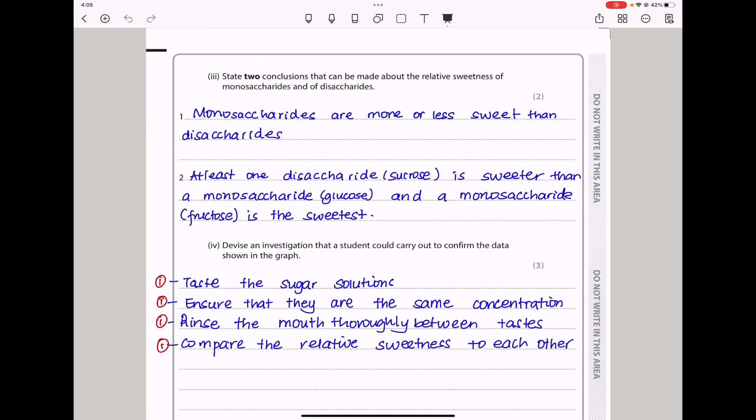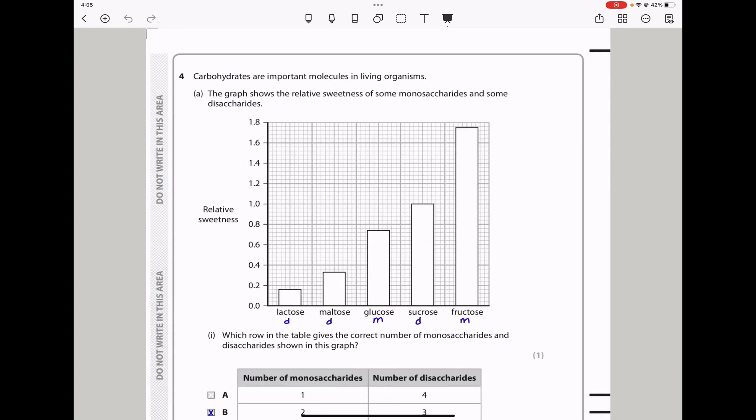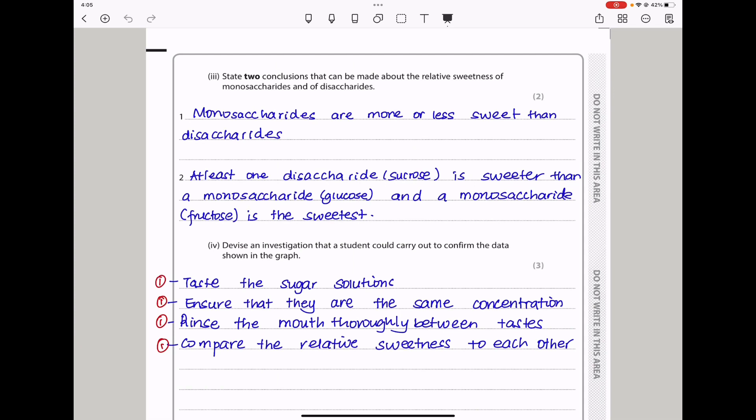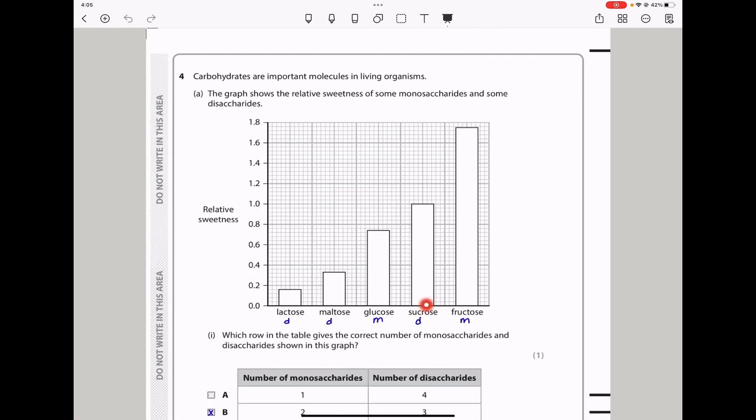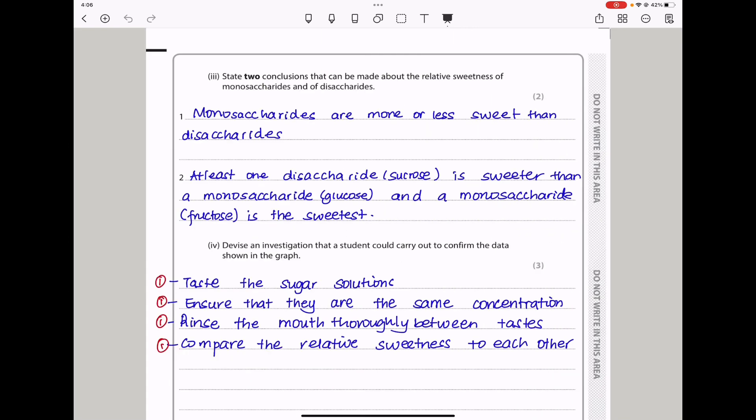Moving on. Here they say state two conclusions that can be made about the relative sweetness of monosaccharides and disaccharides. If we go back to the graph, we can see overall there are more monosaccharides that are sweeter than disaccharides. So here I said monosaccharides are more or less sweet than disaccharides. I said more or less because there is sucrose, which is sweeter than one of the monosaccharides, so we can say more or less. And then I say at least one disaccharide, which is sucrose, is sweeter than a monosaccharide, which is glucose, and a monosaccharide fructose is the sweetest of them all.